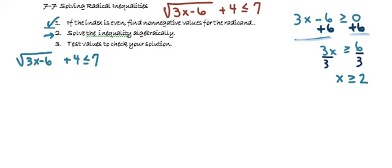First, isolating the radical by subtracting 4 from each side results in an isolated square root of 3x minus 6 must be less than or equal to a positive 3.